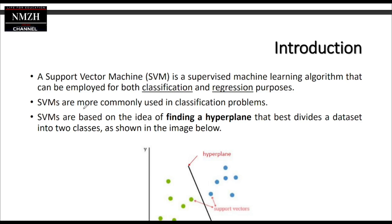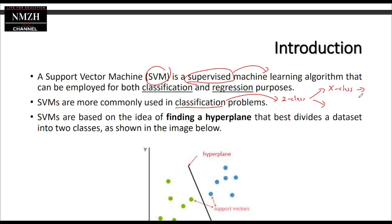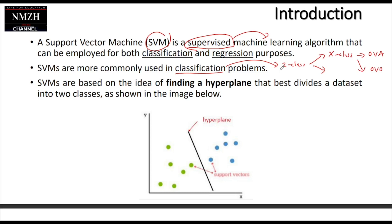What we discussed yesterday: SVM is a supervised machine learning algorithm that can be applied for both classification and regression purposes. It is commonly used for classification of two classes, and for multi-class it is handled via one-versus-one or one-versus-all approaches. The most important concept in SVM is finding the hyperplane.